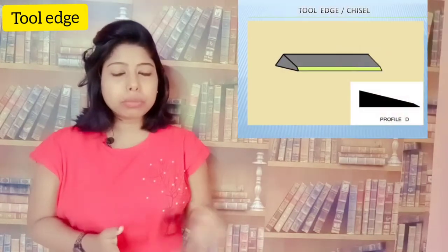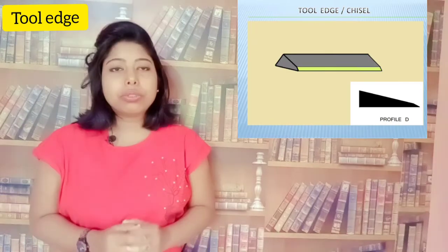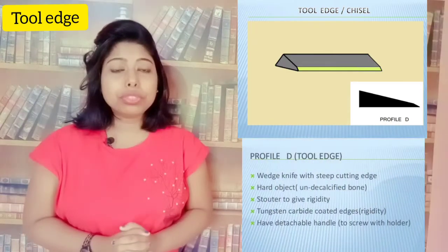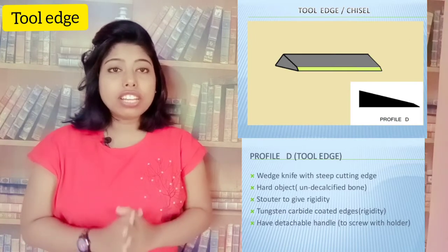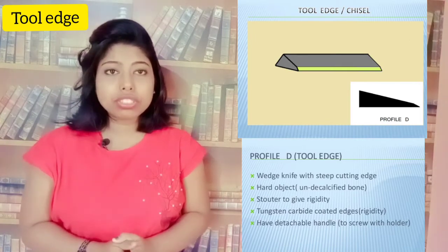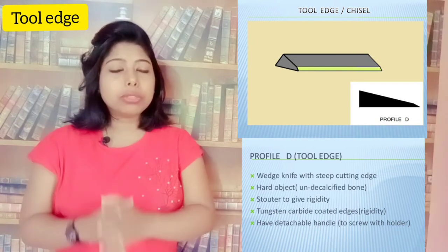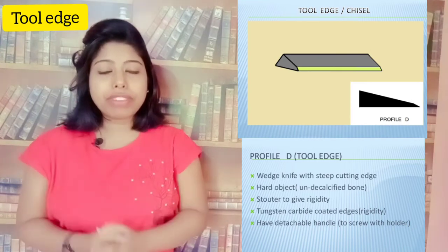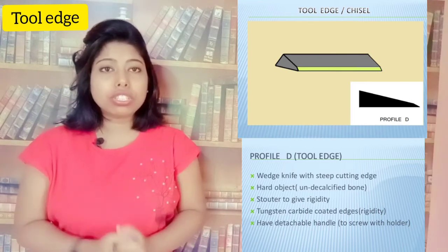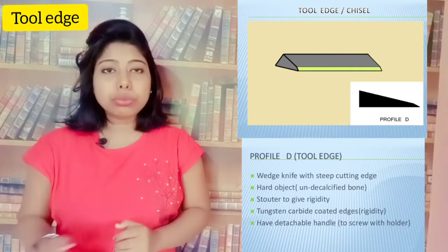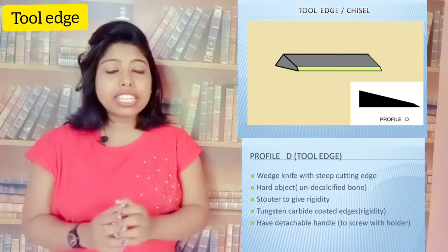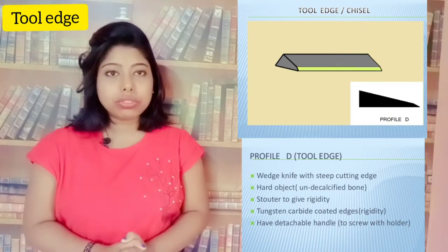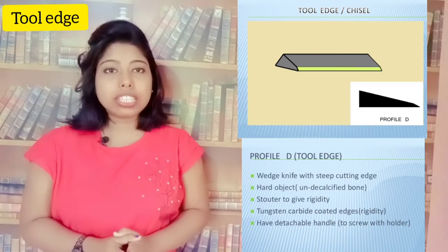The last type is the tool edge — spelled E-D-G-E. It is also plain on both sides but has a steep cutting edge. The tool edge knife is used for hard objects or hard tissues, including undecalcified tissues, so that they can be easily cut into thin slices and examined under a microscope.